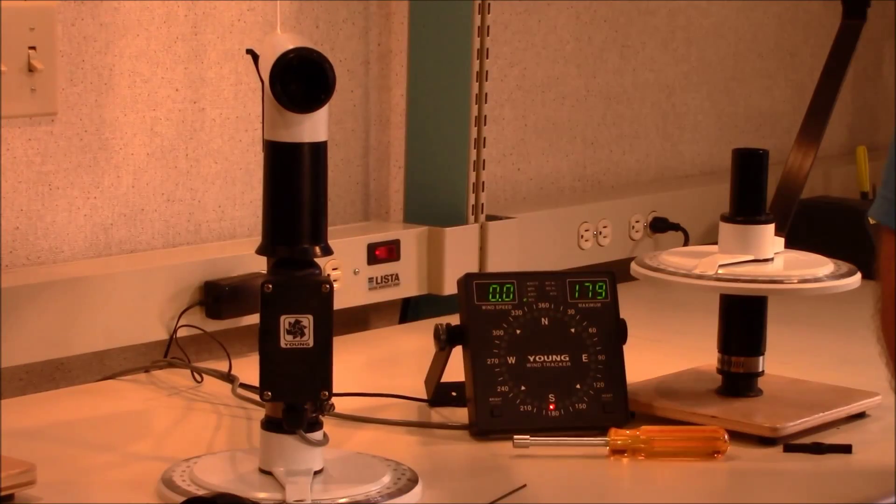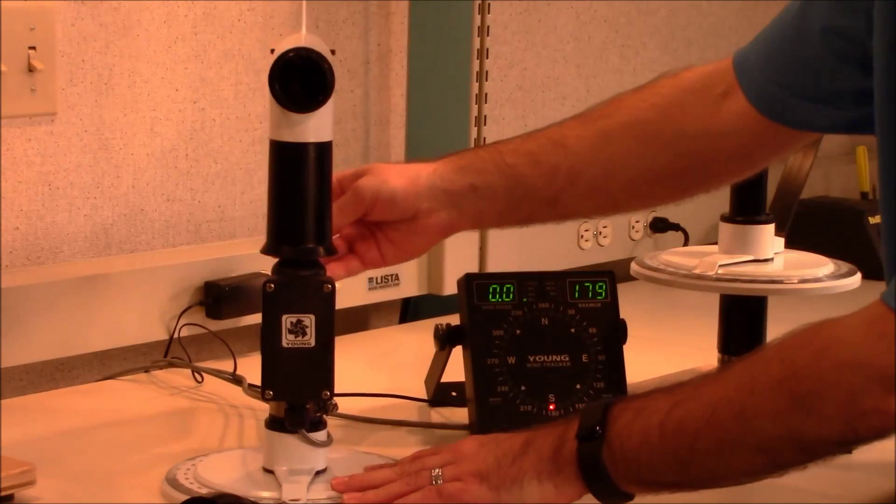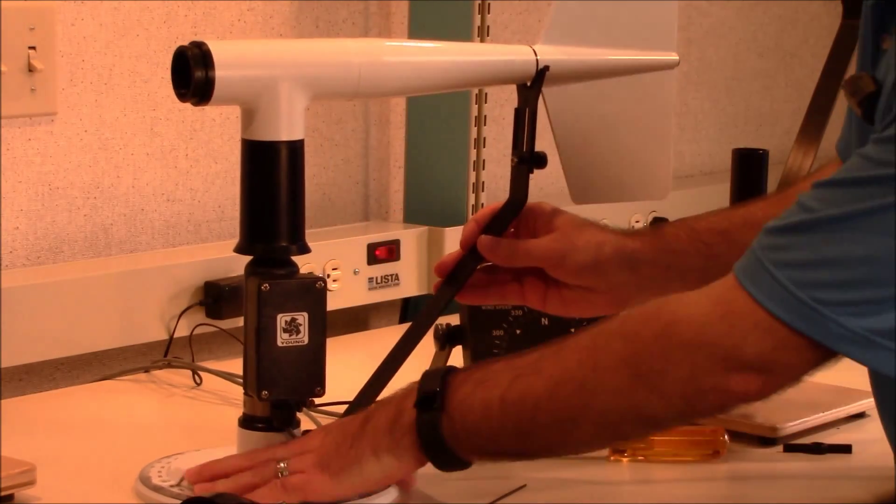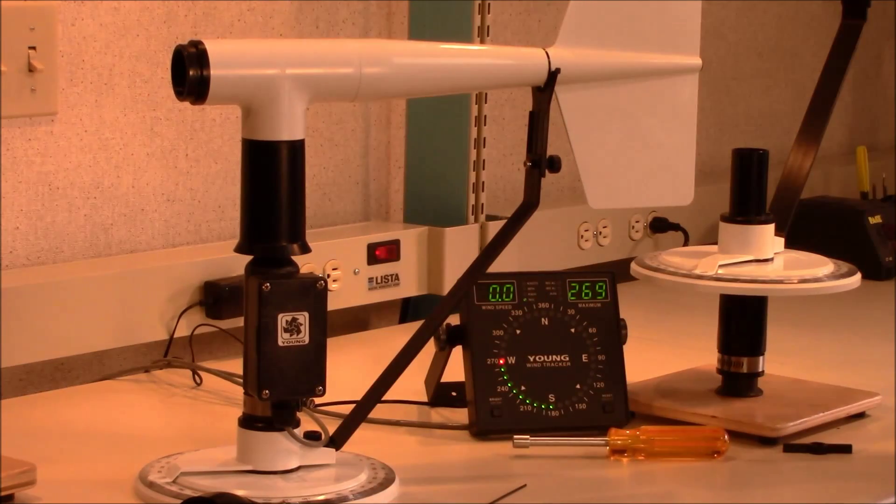We recommend that you check the direction every 30 degrees. For the purposes of this demonstration, I will be checking one more direction. I'm going to set it to 270 degrees, and the display is reading 269, which is within the tolerance.